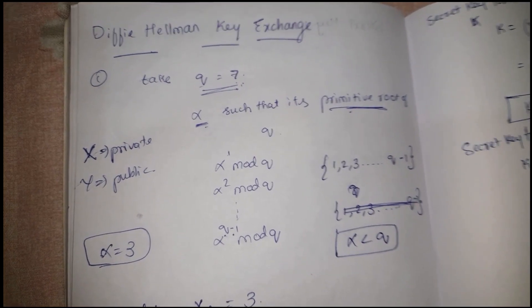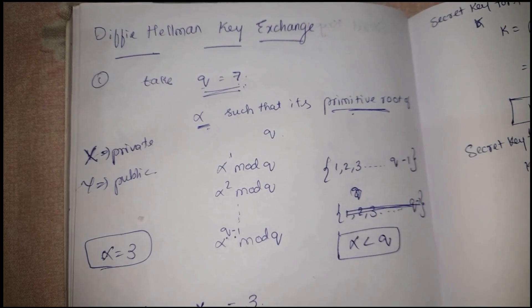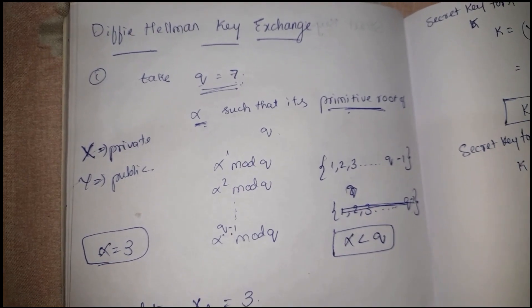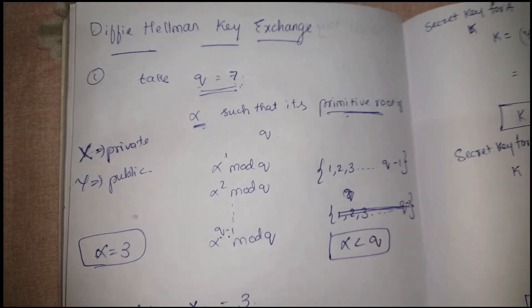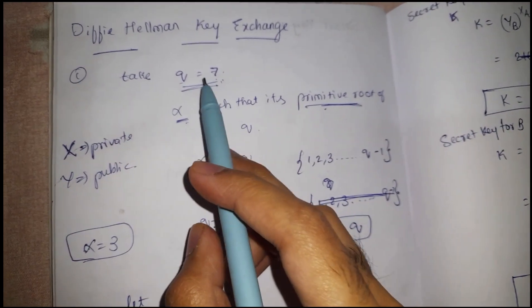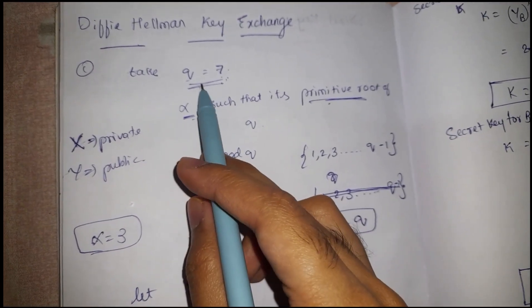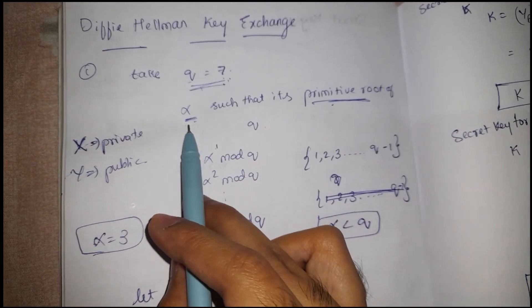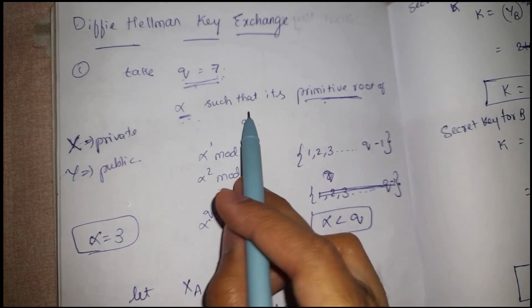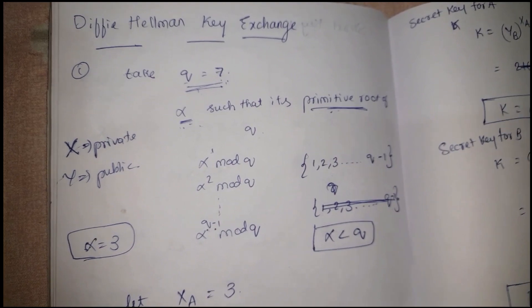Let's take an example to try and understand this Diffie-Hellman key exchange algorithm. First step is we need to take a number q, a prime number basically q. Then after that, we need to take alpha such that it is a primitive root of q.